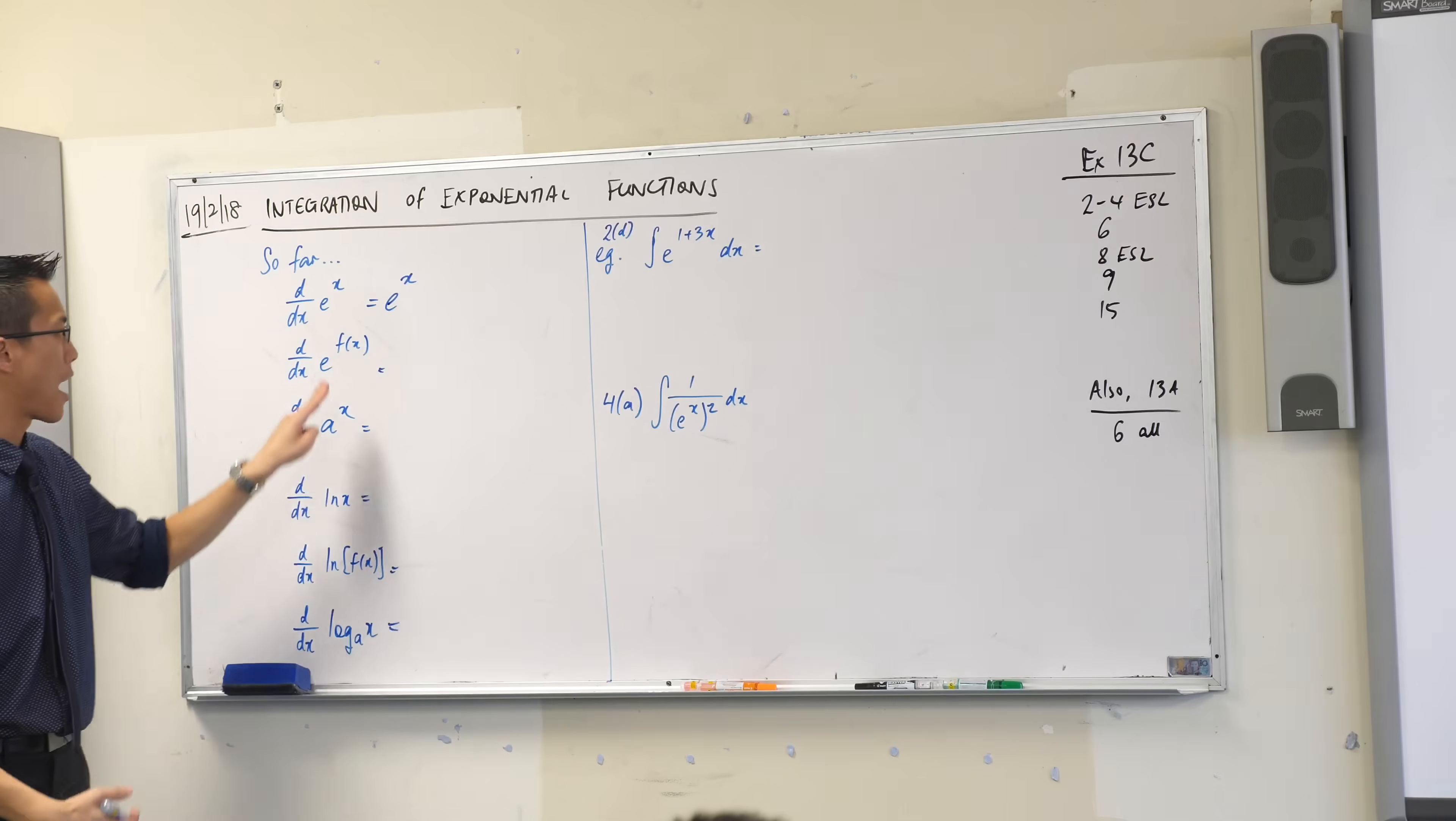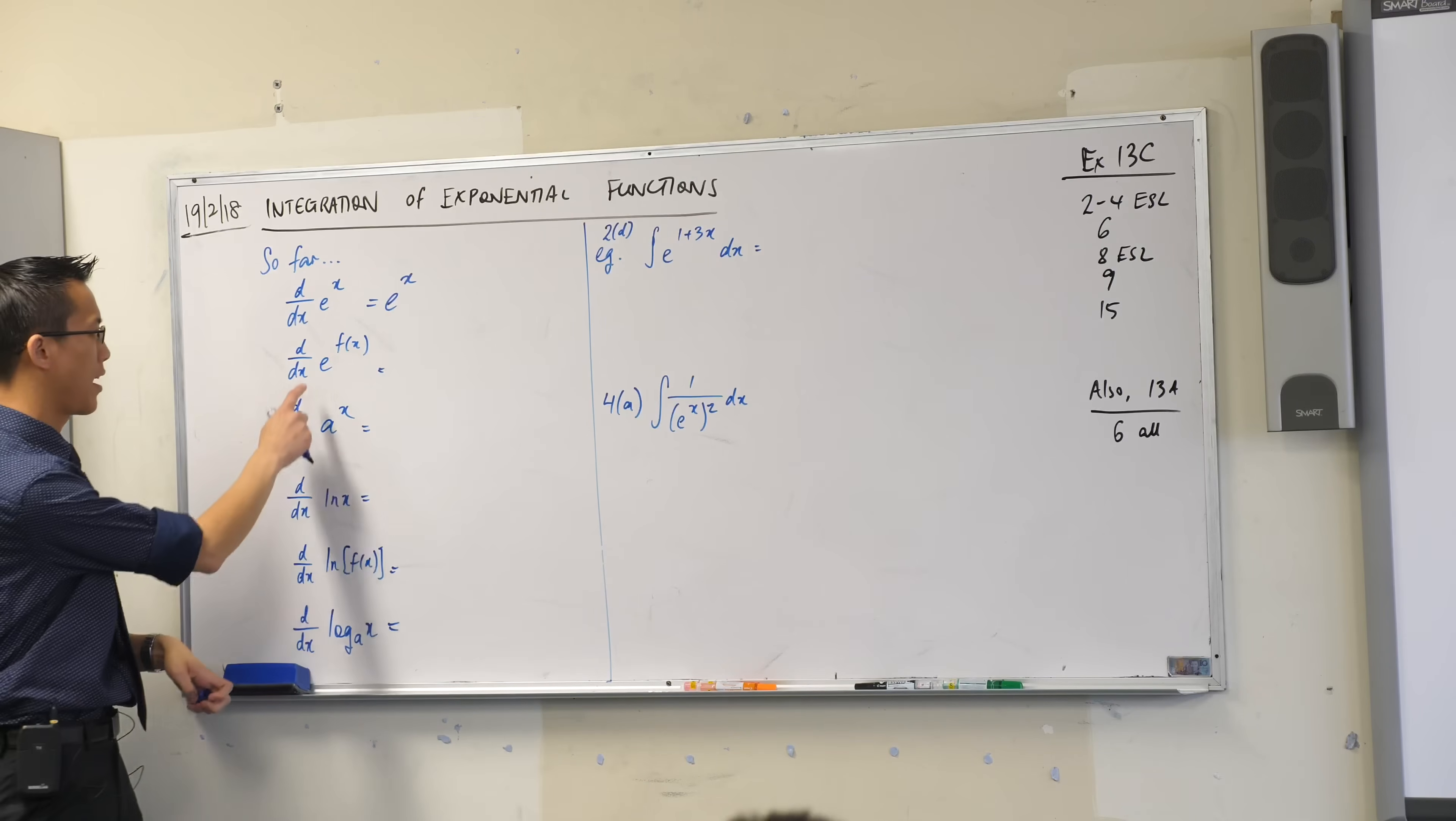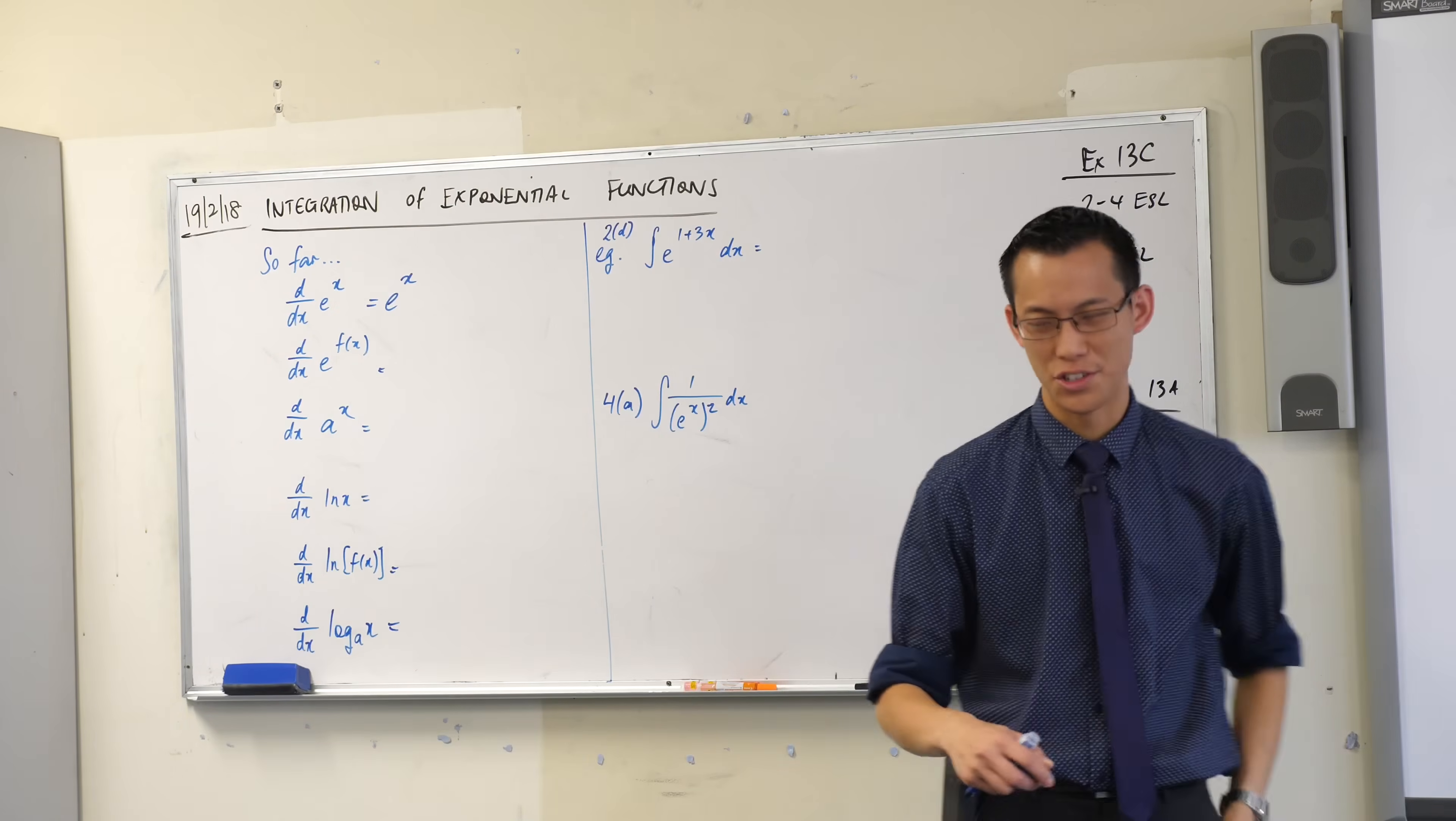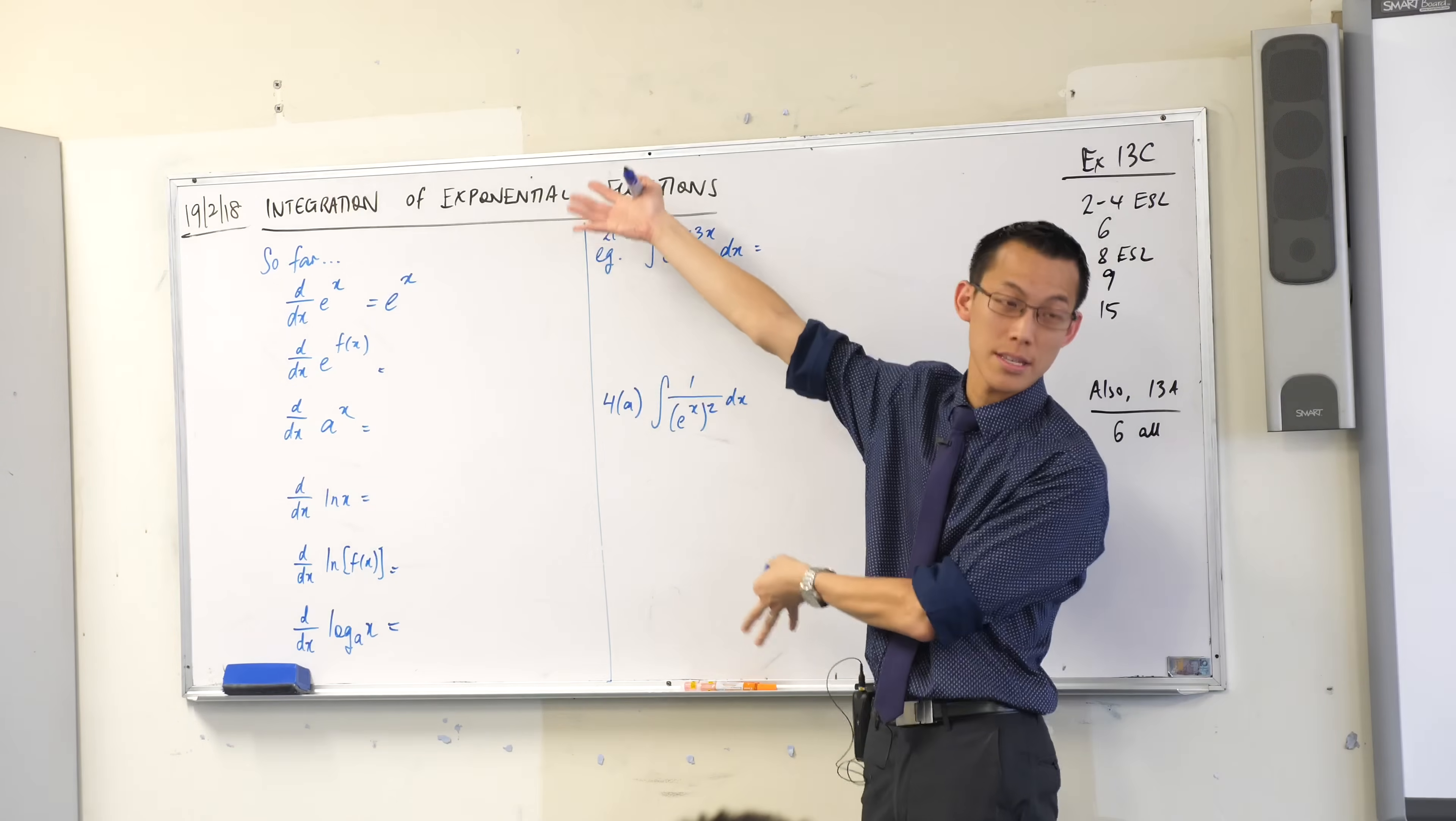If I say e to the power of some function of x, this is chain rule, right? Function of a function. There's the inside, here is the outside. So when you do chain rule, you have to do each in sequence, you've got to remember to do both.